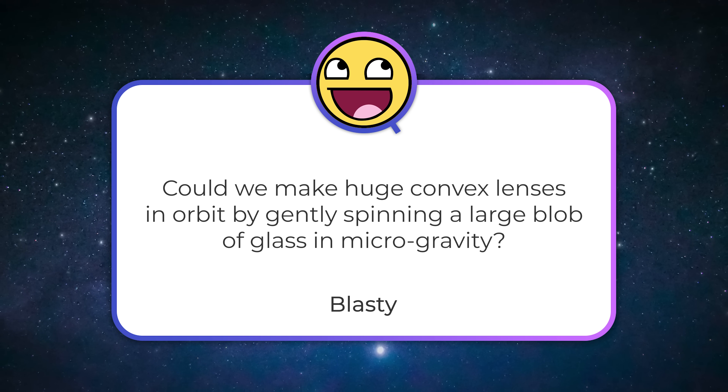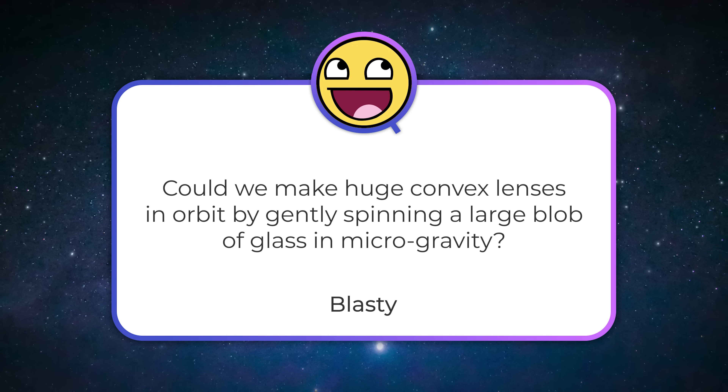Can we make huge convex lenses in orbit by gently spinning a large blob of glass in microgravity? Theoretically yes — there have been a bunch of proposals to do something like this. There was a recent NASA NIAC grant where someone proposed having some kind of fluid inside a bag, spinning it so it flattens out and takes on the shape of a convex mirror. The faster you spin it, the more the material tries to get to the sides of the container, which hollows it out a bit and gives you a convex surface.